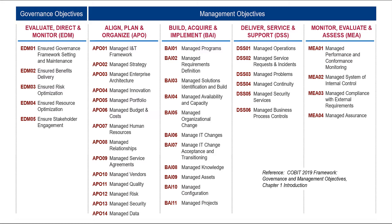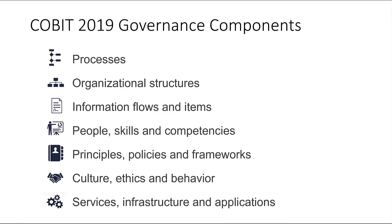Those are the Governance and Management Objectives. Remember, each of those relates to one process, but the process is part of what we call Governance Components. I really like these a lot. You might remember these as enablers in COBIT 5. In fact, in COBIT 5 we loved enablers, but we really couldn't figure out how to associate them or to leverage them as part of our Governance Framework.